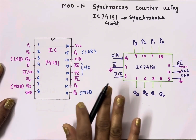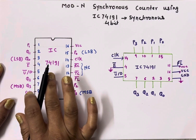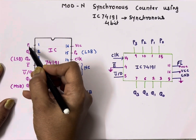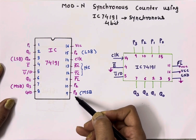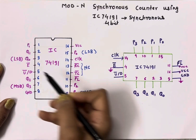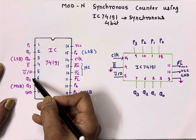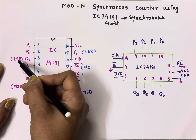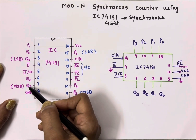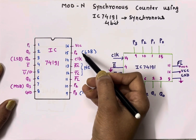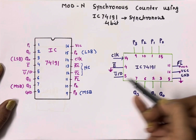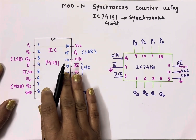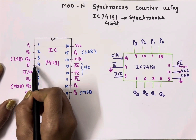IC 74191 is a 4-bit synchronous counter IC. Here P0, P1, P2, and P3 are four inputs to four flip-flops, and Q0, Q1, Q2, and Q3 are four outputs. Q0 is the least significant bit and Q3 is the most significant bit. Similarly, P0 is LSB and P3 is MSB. E-bar is the enable pin — to turn this IC on, pin number 4 must be connected to ground.